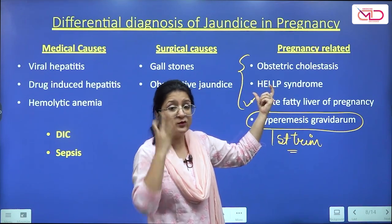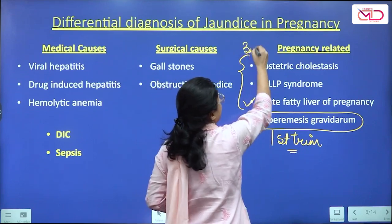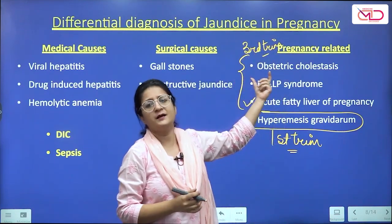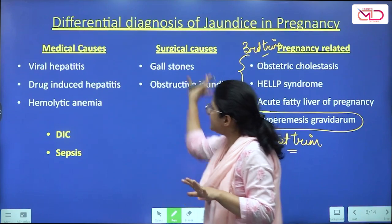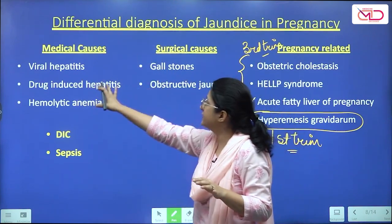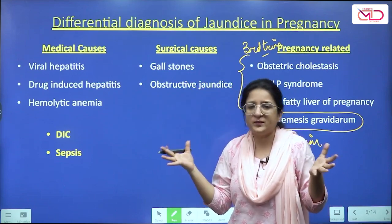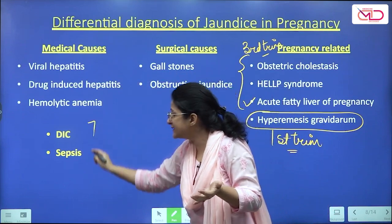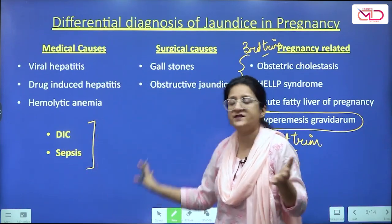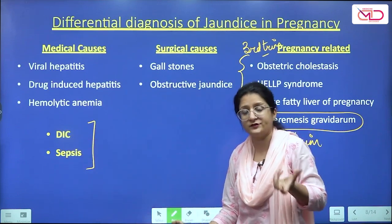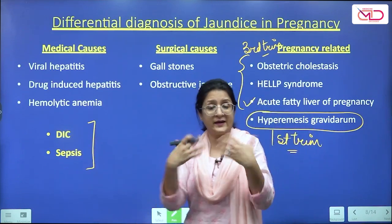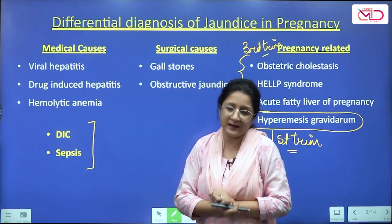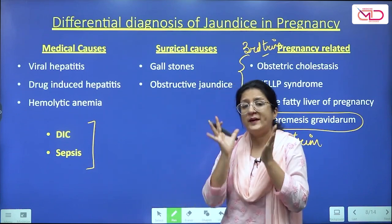Most other pregnancy-related conditions typically present in late pregnancy, most commonly in the third trimester. Coincidental causes — medical and surgical — can present at any time during pregnancy. Look out for the clinical profile to see if it is going in favor of DIC, whether there are high-risk factors for DIC, or whether the woman appears to be in sepsis.